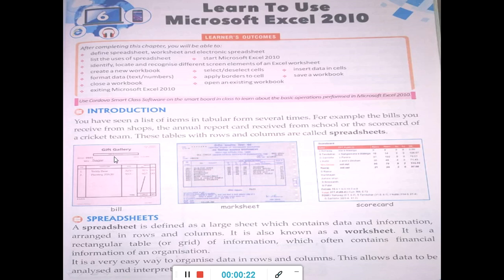This is page number 83 of your computer book. You will take out page number 83 of your computer book. Let us read line by line. Then I will explain and I will also show you how the Microsoft Excel window looks like. After completing this chapter, you will be able to: define spreadsheet, worksheet and electronic spreadsheet; list the uses of spreadsheet; start Microsoft Excel 2010; identify, locate and recognize different screen elements of the Excel worksheet; create a new workbook.